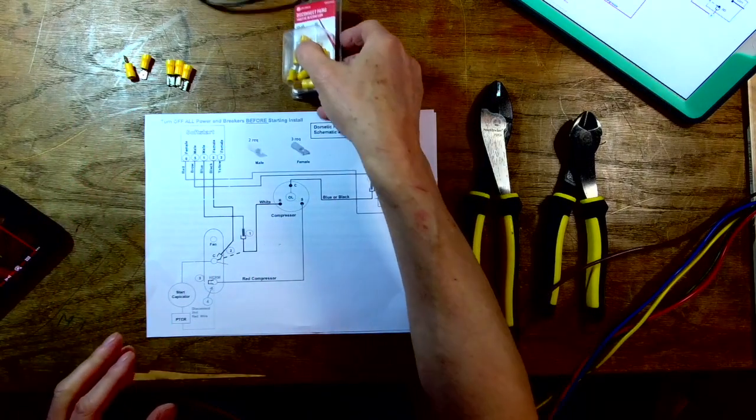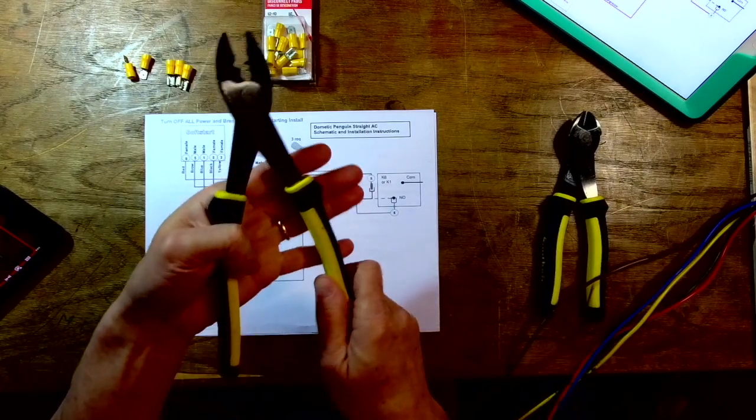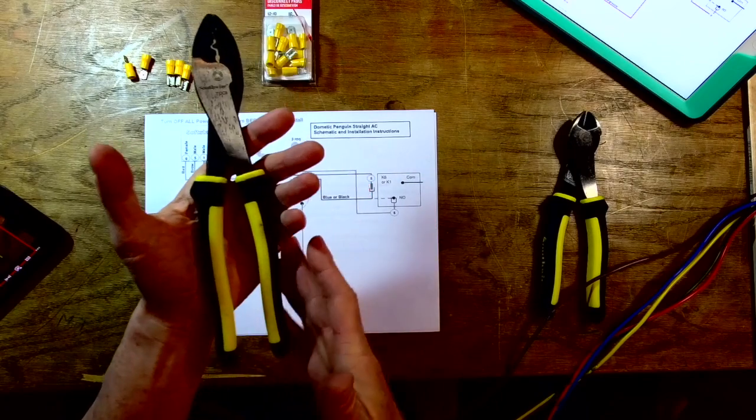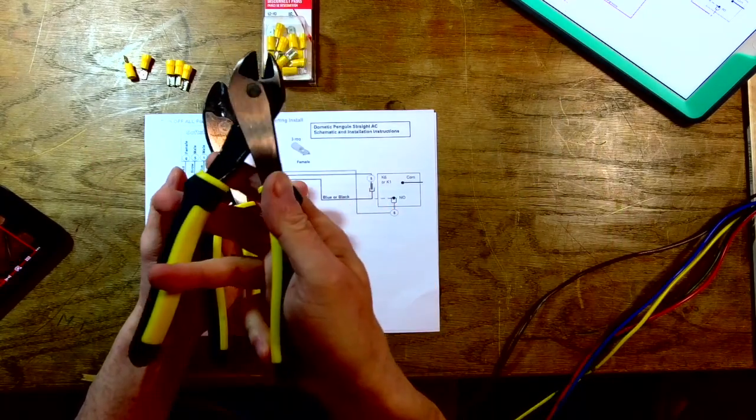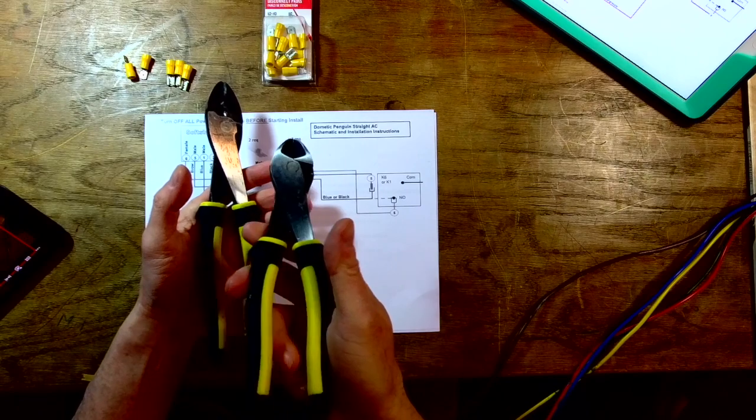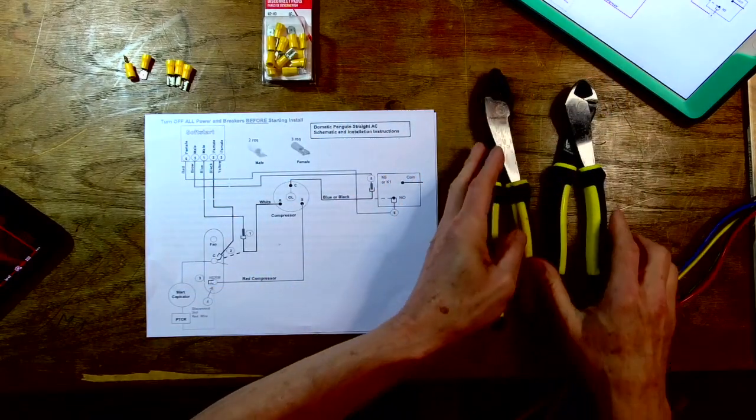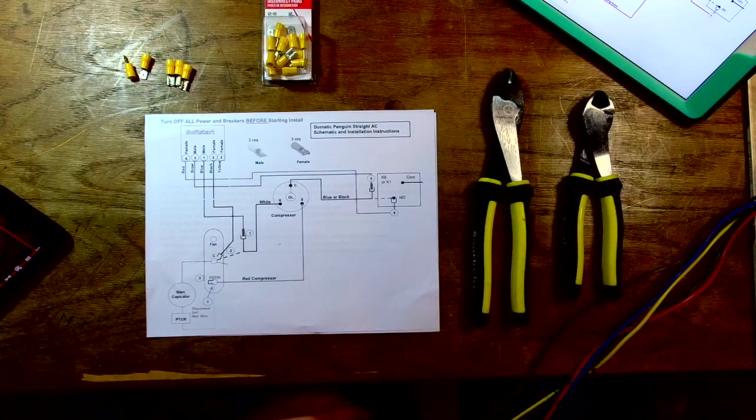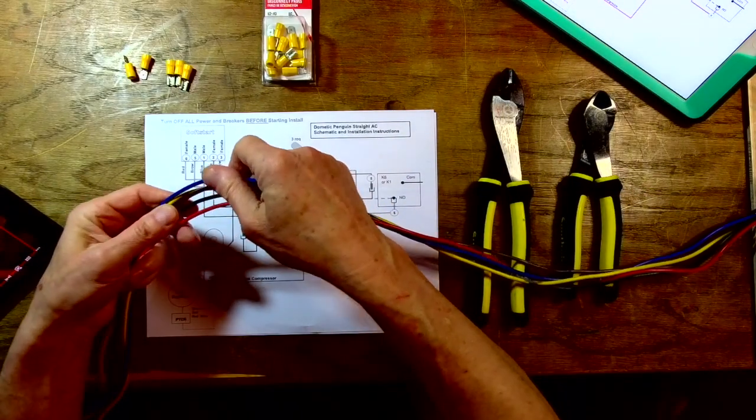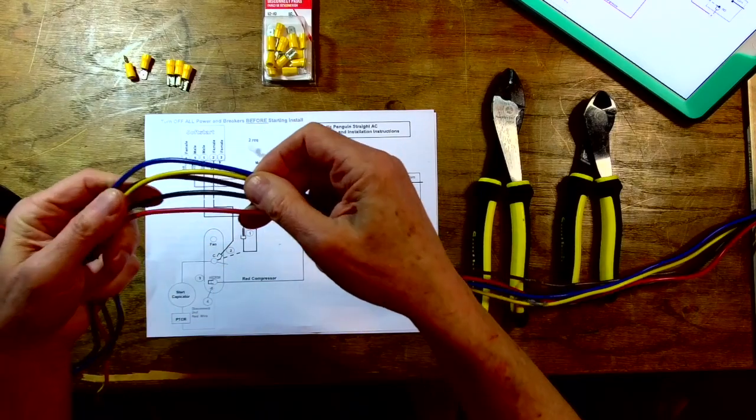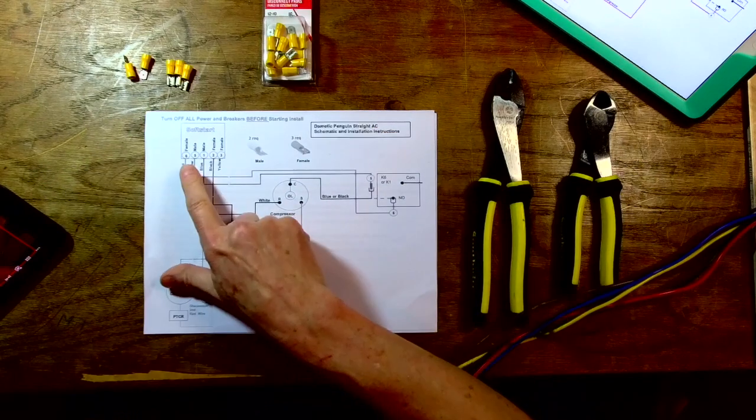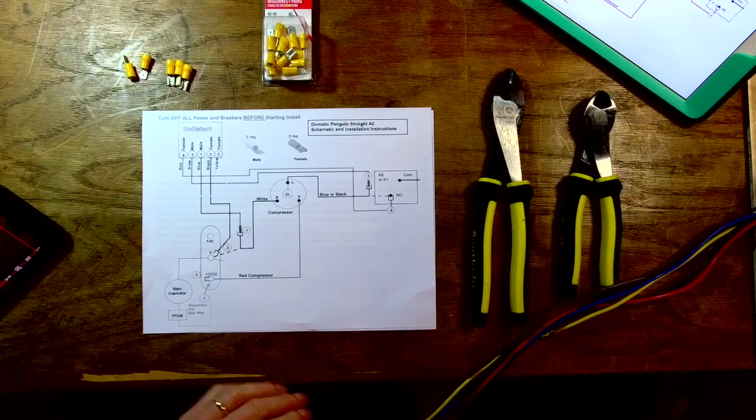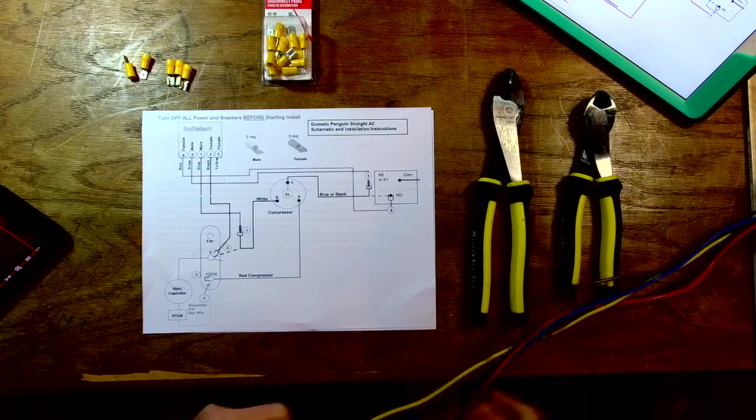I also have a contractor grade crimper - you can get a cheaper one than that - and contractor grade diagonal cutters. Again, you can get inexpensive ones. You may not need the diagonal cutters but I like having them around. I've got five wires here that are all color-coded, and the diagram shows us the wiring colors and whether they need a male or a female connector.